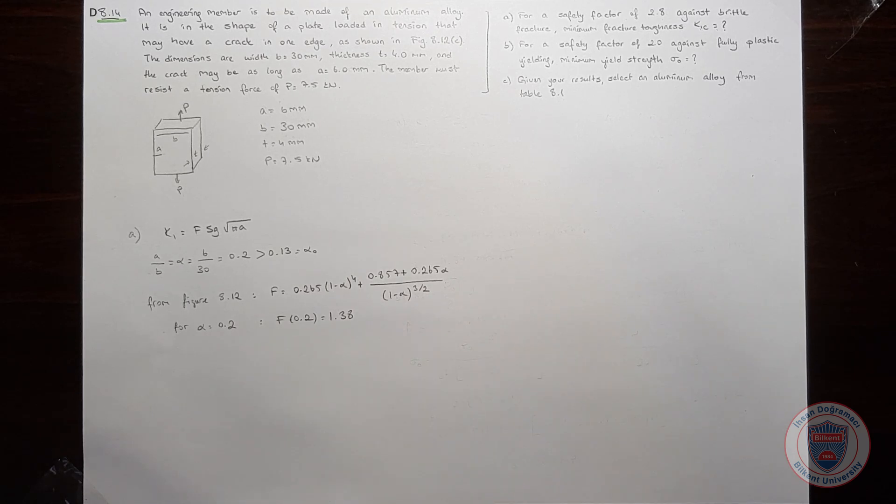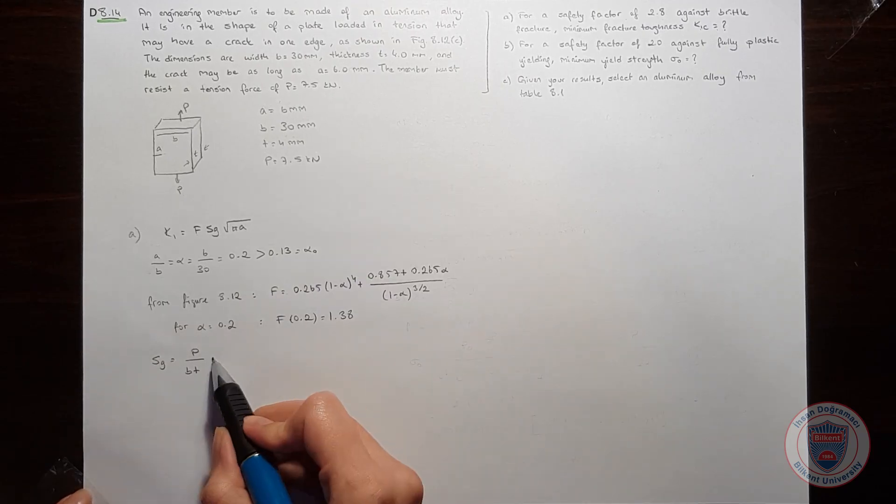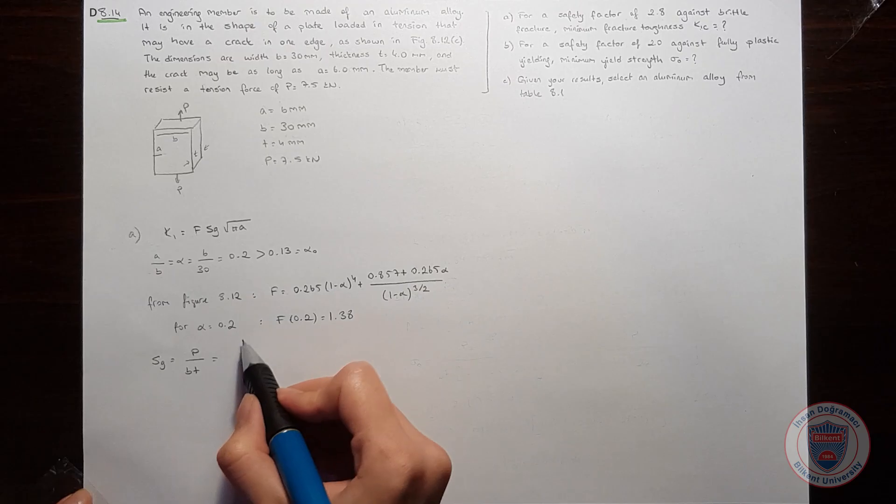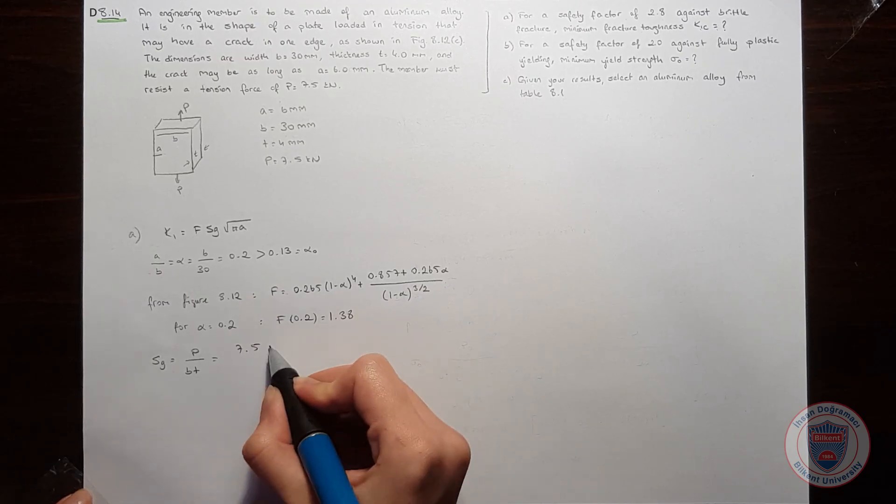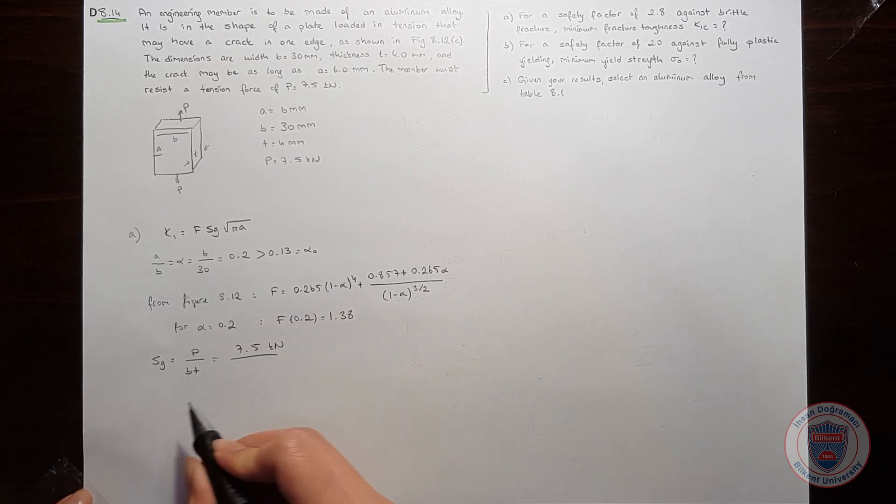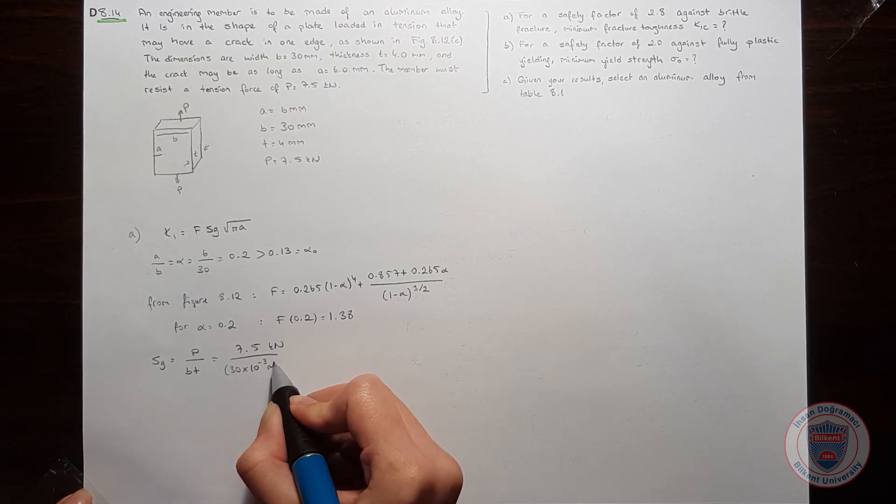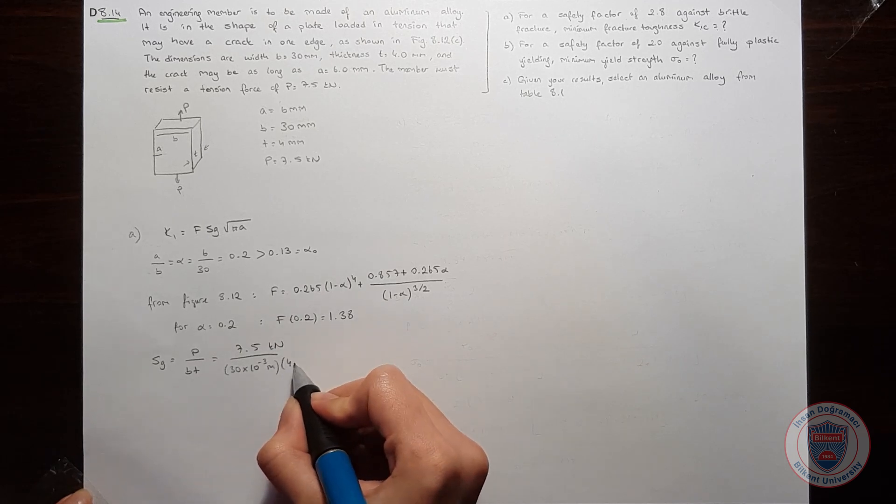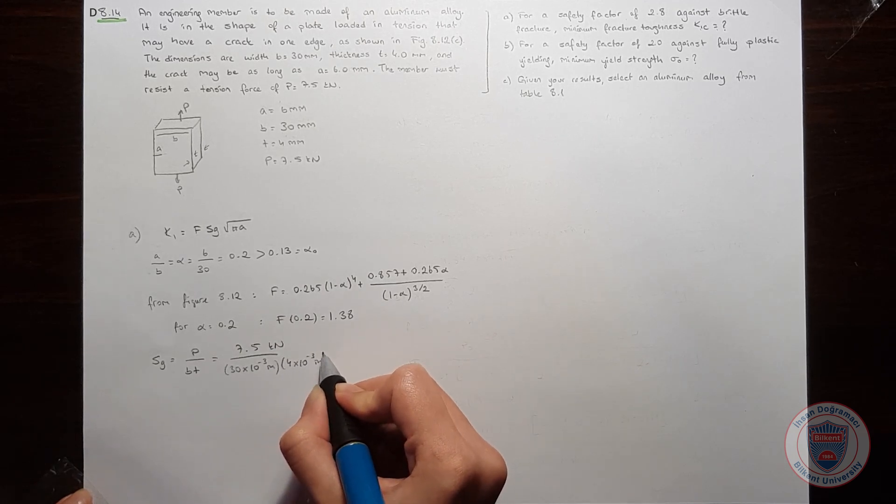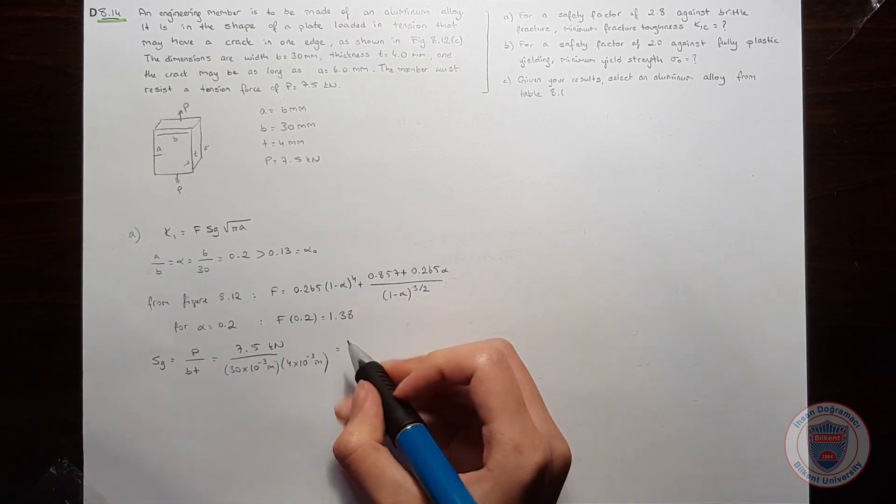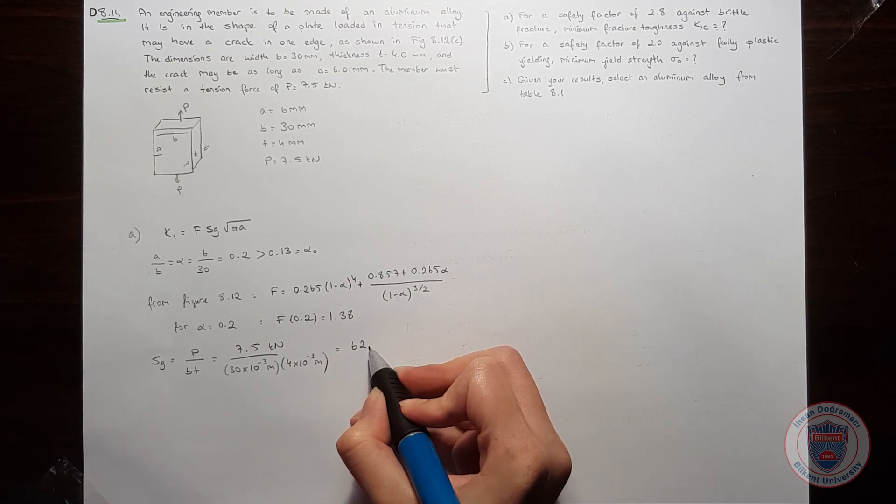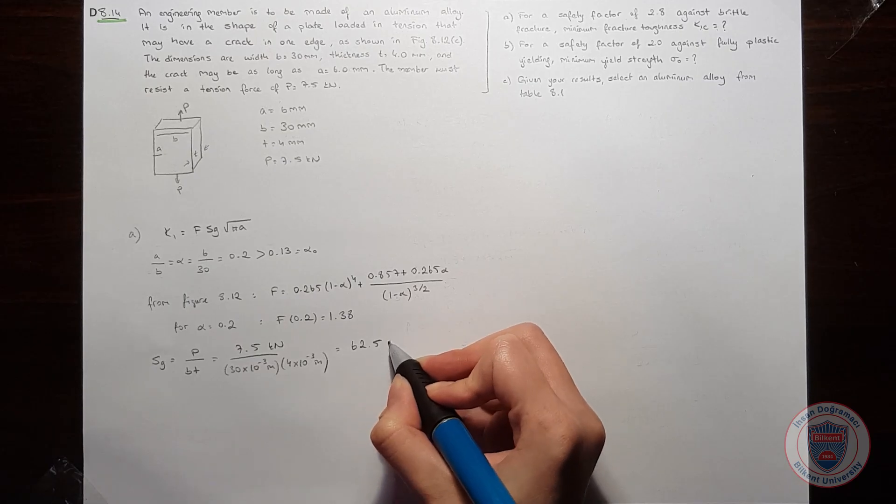We know the form factor. Now we should calculate SG. We know that SG is equal to load over BT. We have all values to find this equation. We know that P is 7.5 kN, B is 30 mm, and the thickness is 4 mm. And we obtain SG as 62.5 MPa.